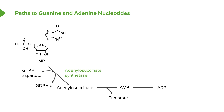To go from AMP to adenosine diphosphate is a simple reaction catalyzed by an enzyme known as adenylate kinase, and that requires energy from ATP. To make ADP into ATP requires the action of an enzyme known as nucleoside diphosphokinase, or NDPK.